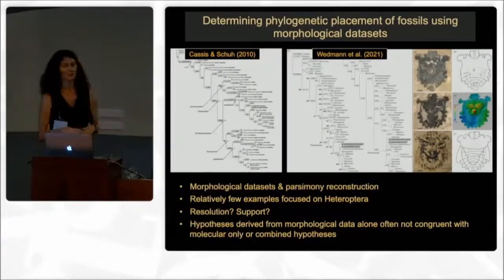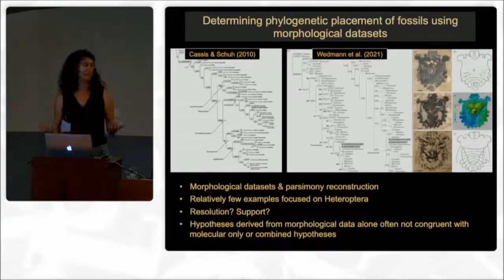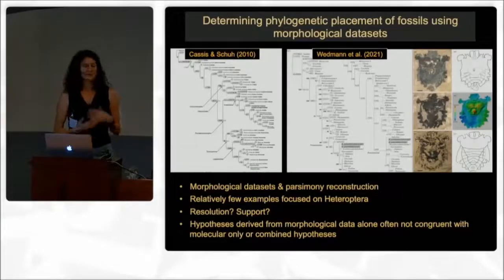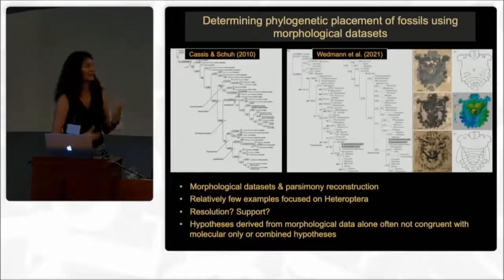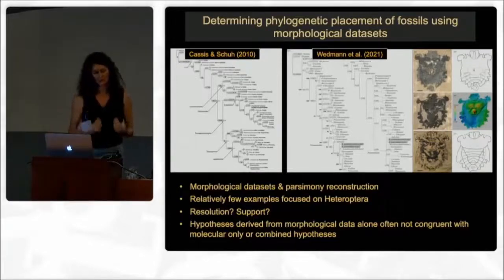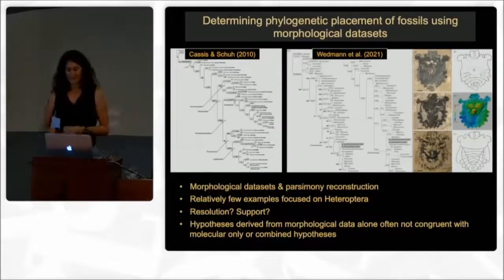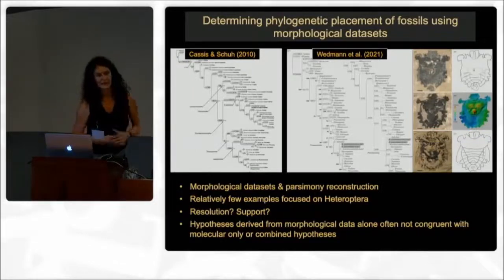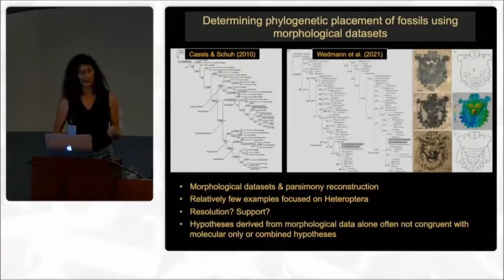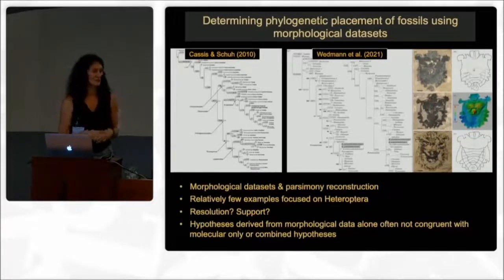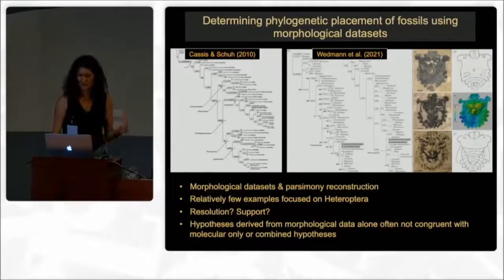There are alternatives to that. One option is a morphological-only data set — many analyses have done that using morphological data, parsimony reconstruction typically — and you can include fossils into these data sets and phylogenetically place them. Even though this is a common practice across insects, when you look at true bugs there aren't actually that many studies that have done exactly that, which is a little surprising. The problem with morphology-only analyses is they're often not very well resolved, not as well supported as they could be, and sometimes in conflict with combined morphological and molecular analyses.